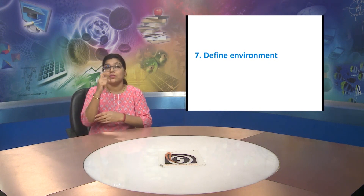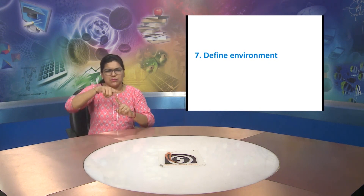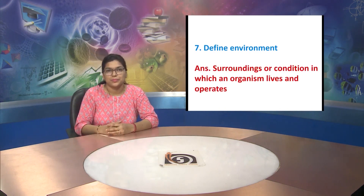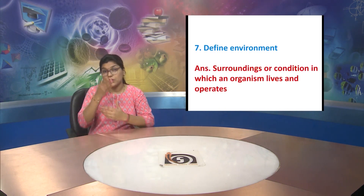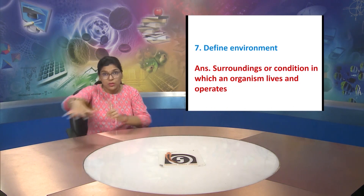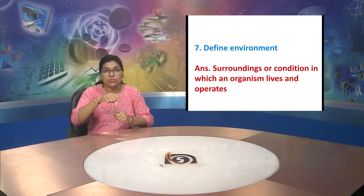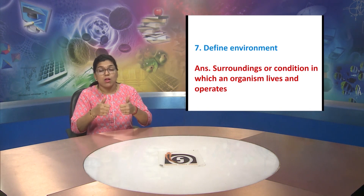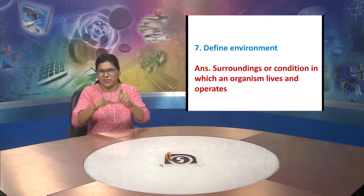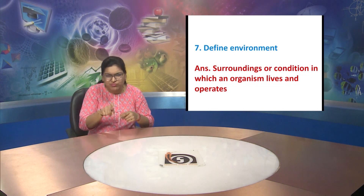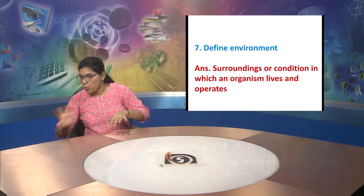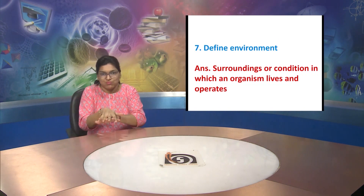Question seven: define environment. Answer: the surrounding or conditions in which an organism lives and operates is termed as environment.